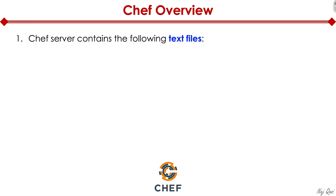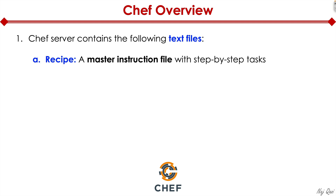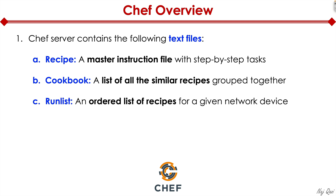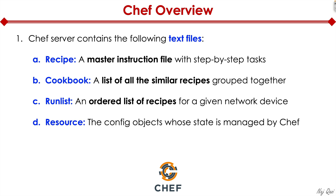After installing the Chef server, there are a few text files to be aware of. You have a file called recipe, which is the master instruction file with step-by-step tasks. The next one is cookbook — a list of all similar recipes grouped together. Another one is called run list, which is an ordered list of recipes for a given network device. And finally, there's a text file called resource, which contains the config objects whose state is managed by Chef.